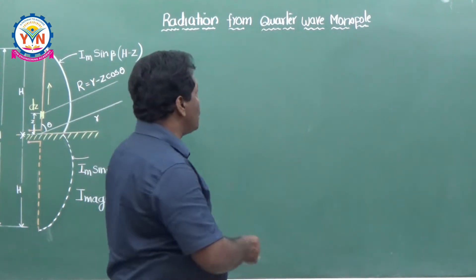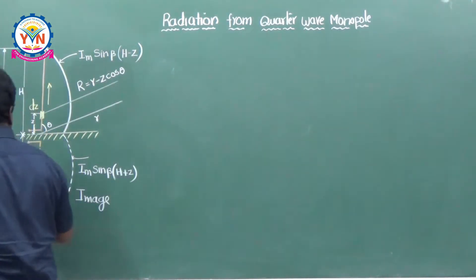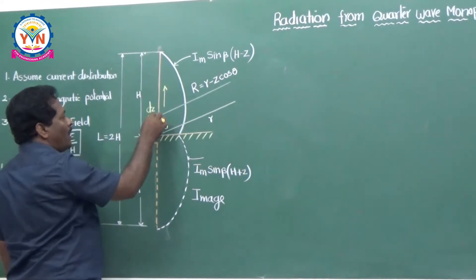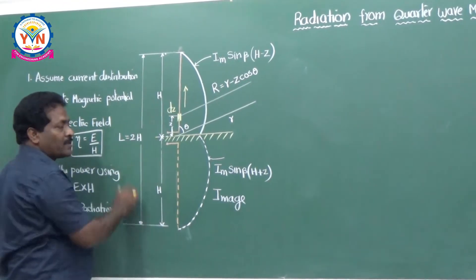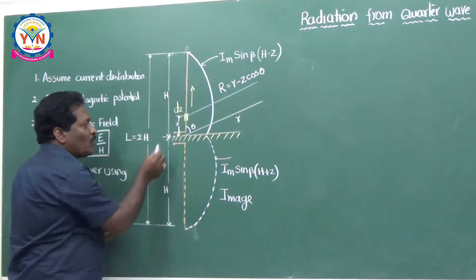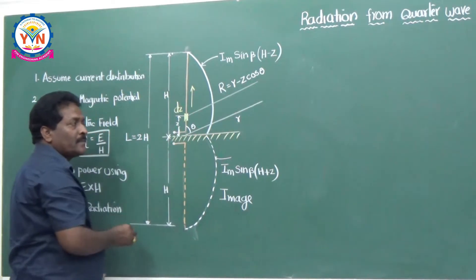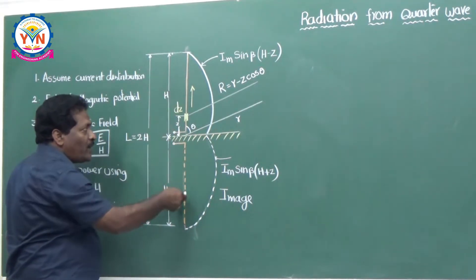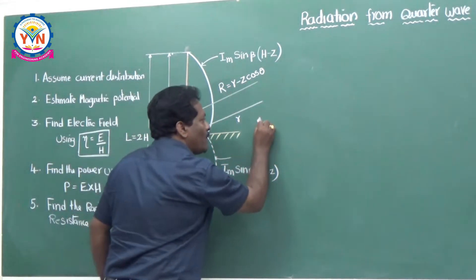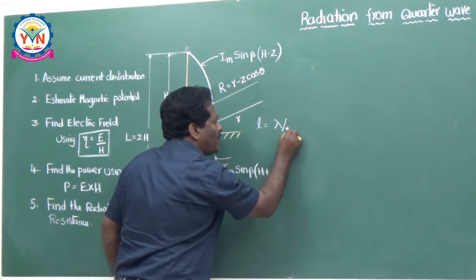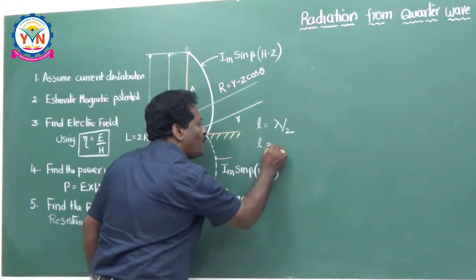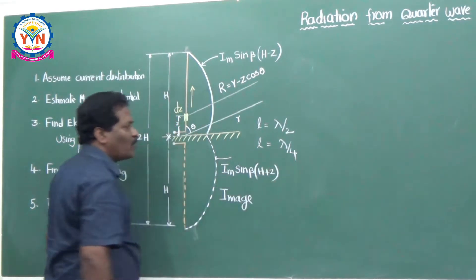In order to get all these results, let me explain very clearly using this figure. This is a dipole of length L equal to 2H — a centre-fed dipole. As it is a half-wave dipole, its length L equals λ/2. If you take only half of that length, λ/4, it is a quarter wave monopole.